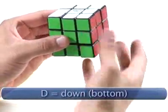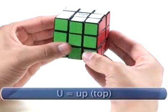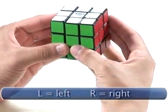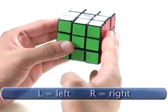When I say down, I mean the bottom face. When I say up, I mean the face on the top. When I say left and right, I mean the left and right face.